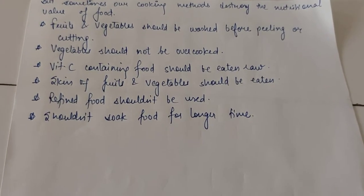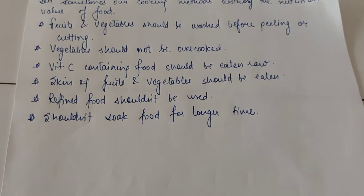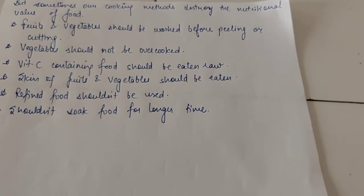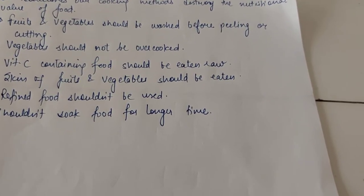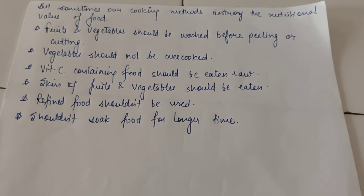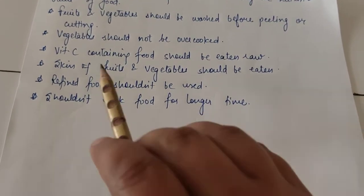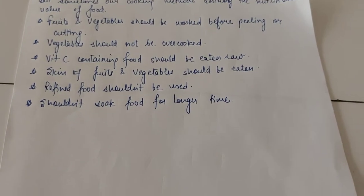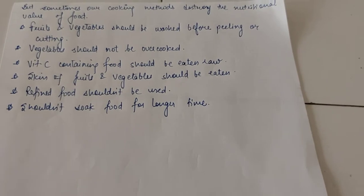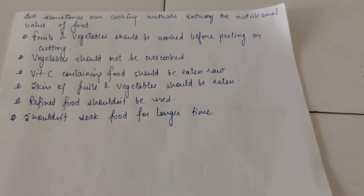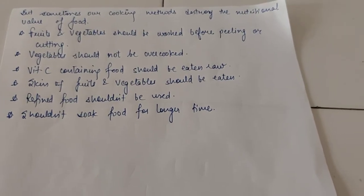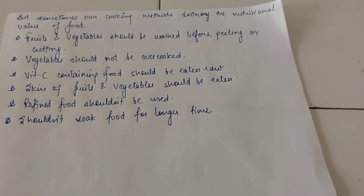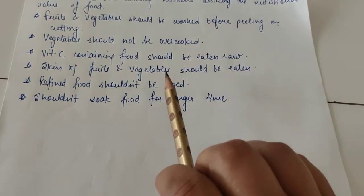Vegetables should not be overcooked — you should cook the food only up to a certain extent. Vitamin C containing foods, such as citrus fruits like lemon, melon, and orange, should be eaten raw because vitamin C is destroyed on cooking.